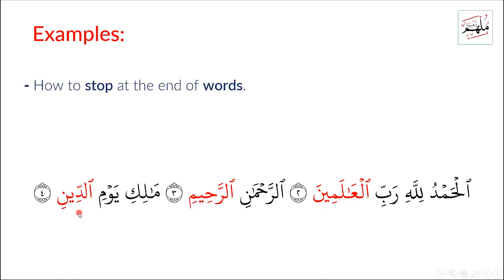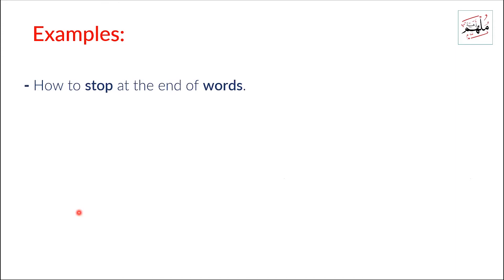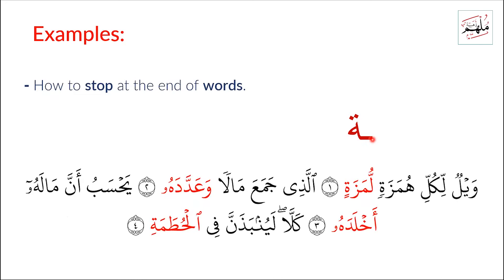This is the general idea of the rule — how to stop at the end of words. We also have some special cases. For example, this is a Ta Marbuuta letter. When we stop on Ta Marbuuta, in this example we should pronounce it as 'ha.' We don't say 'al-hutamat' — that's wrong. We must say 'al-hutamah.'